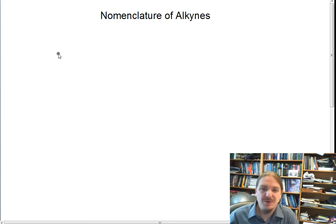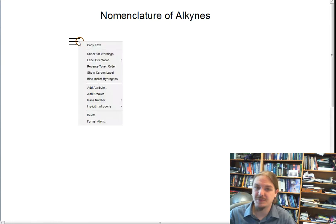Hi. Today we're going to talk about the nomenclature of alkynes. I'm going to start by drawing the simplest of all alkynes. An alkyne is a molecule that has a carbon-carbon triple bond.